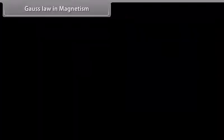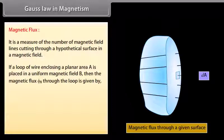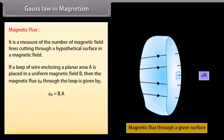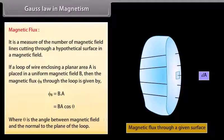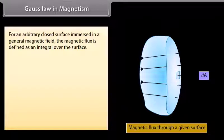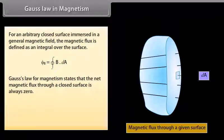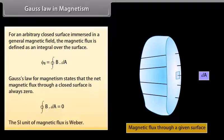Gauss's Law in Magnetism — Magnetic Flux: It is a measure of the number of magnetic field lines cutting through a hypothetical surface in a magnetic field. If a loop of wire enclosing a planar area A is placed in a uniform magnetic field B, the magnetic flux phi_B through the loop is given by the dot product of B and A, equal to BA cos theta, where theta is the angle between the magnetic field and the normal to the plane of the loop. For an arbitrary closed surface, phi_B equals the closed integral of B dot dA. Gauss's Law of Magnetism states that the net magnetic flux through a closed surface is always zero. The SI unit of magnetic flux is Weber.